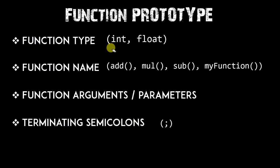The function type means we declare the type of the function — float, character, int, etc. For the function name, you can give any name according to your need: if you want addition use 'add', for subtraction use 'sub', for division something similar, or 'myFunction' or 'void main' — any name you want.